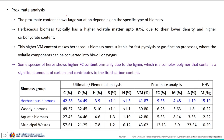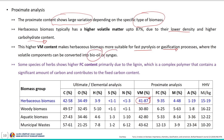The proximate analysis of this herbaceous biomass shows great variation, mainly because of the specific type of biomass — since herbaceous biomass includes varieties ranging from grasses to agricultural residues as well as energy crops. Herbaceous biomass typically has higher volatile matter content; the highest volatile matter content is around 87 percent, mainly due to lower density and higher carbohydrate content. This high volatile matter content makes herbaceous biomass more suitable for fast pyrolysis or gasification processes, where volatile matter can be converted into liquid or gaseous fuel.